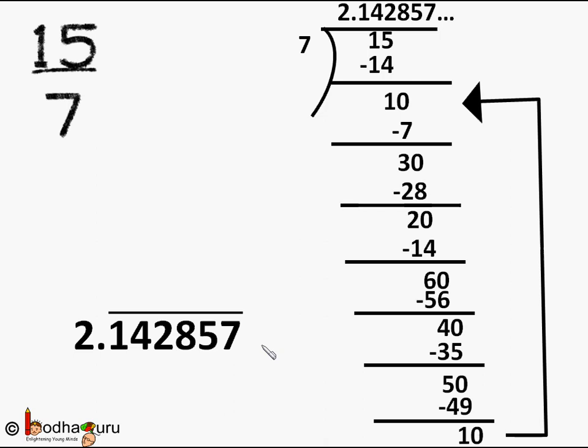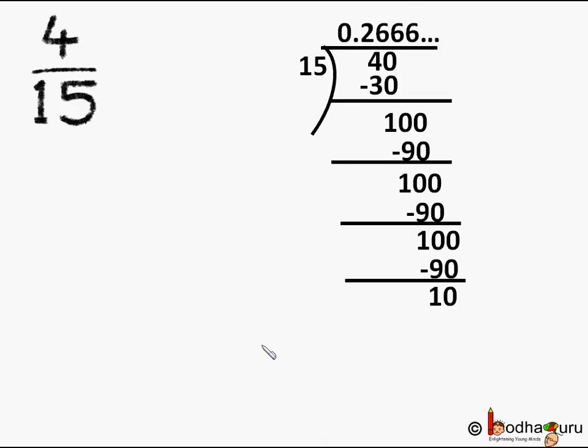When talking about non-terminating recurring decimals, it is not necessary that the whole decimal part will repeat. Let us take an example, 4 by 15. We get 0.2, then 10 we get 0, 6 times 15 is 90, again the remainder is 10. We do 100 by 15, we get 6 and 6 will keep on repeating. So the answer of 4 by 15 is 0.2666 and so on, and we write it as 0.26 with a bar placed over 6.